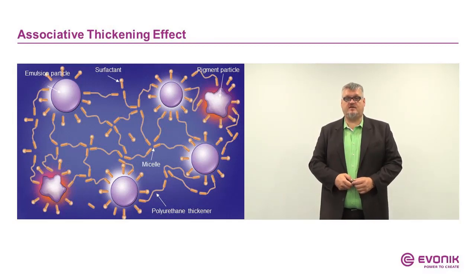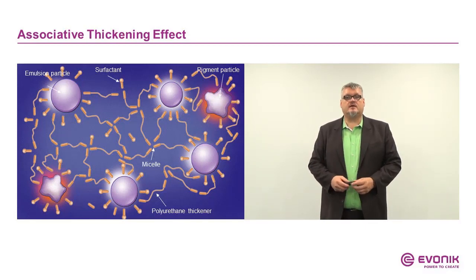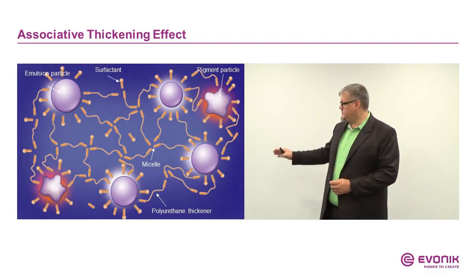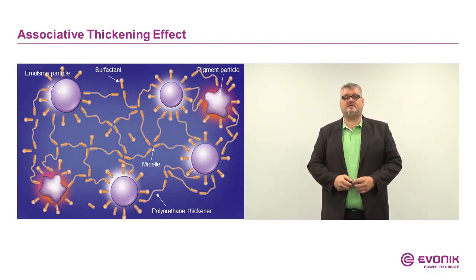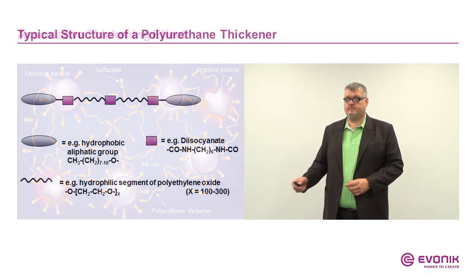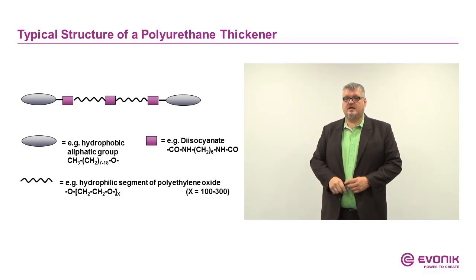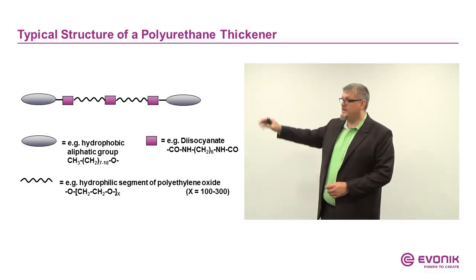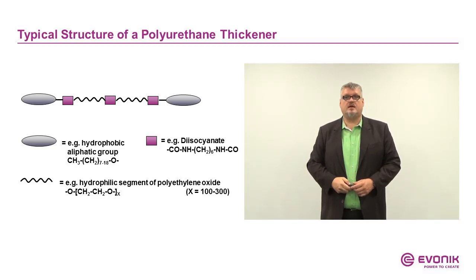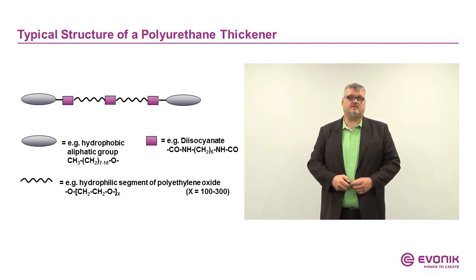The associative thickening effect has a different function. Associative thickeners consist of a chain of hydrophilic chemistry and two hydrophobic end groups. With these end groups, they are able to connect to fillers and to emulsion particles and connect them together, giving increased viscosity. The Tego VSCO Plus products are these kinds of polyurethane-associative thickeners.